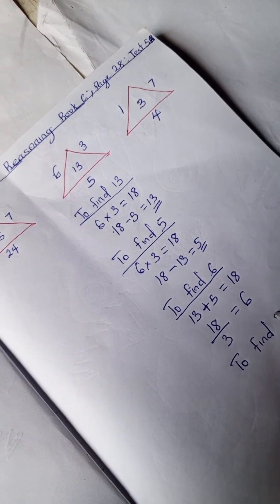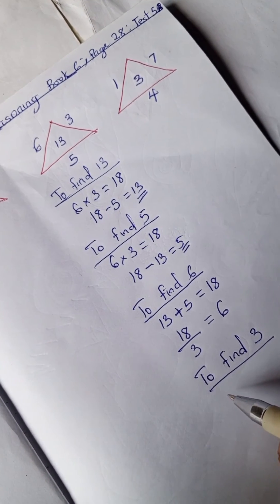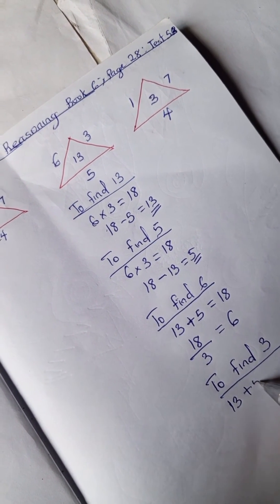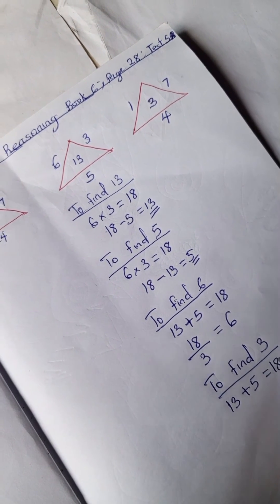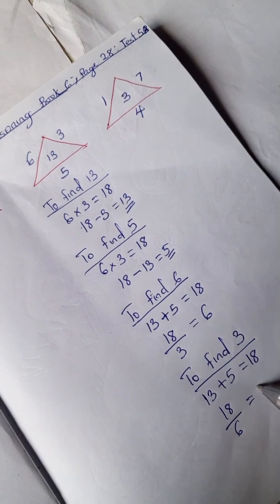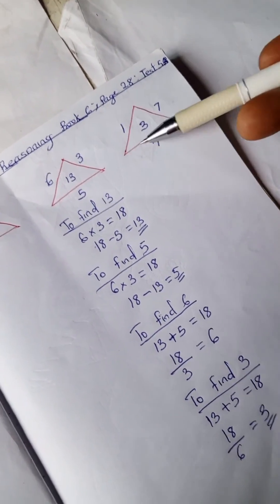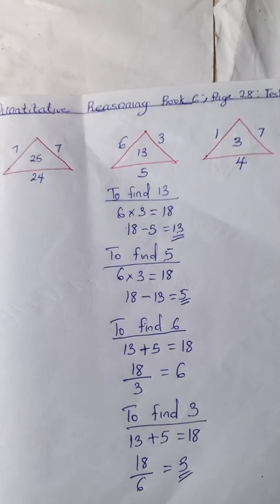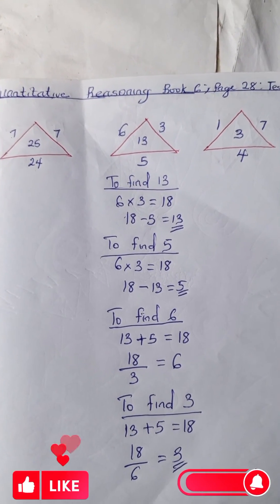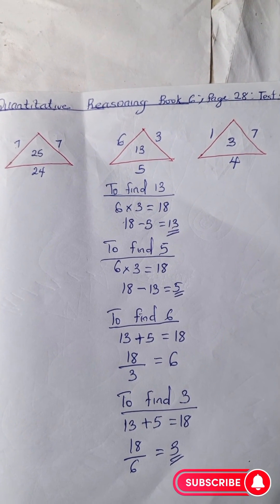To find 3: you have 13 plus 5 equals 18, and 18 divided by 6 is 3. The same thing you do for the other ones. Don't forget to like and subscribe to this channel for more quantitative reasoning solutions. Bye!